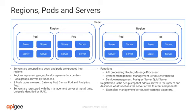This diagram illustrates the concepts of regions, pods, and servers, and their relationships to each other. On Apigee Edge, it is possible to add and remove logical and physical capacity from the system. During installation, each server is registered with its corresponding pod. Associations between servers and pods are managed using UUIDs. During installation, a UUID is generated for each server. These UUIDs are later used to register the server to the pod.